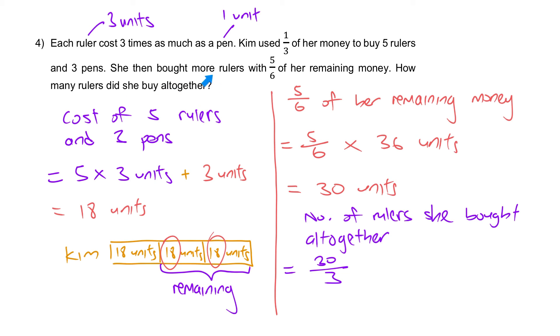Remember, she already bought five at the beginning, so it's this 10 plus the earlier five rulers to give you 15.